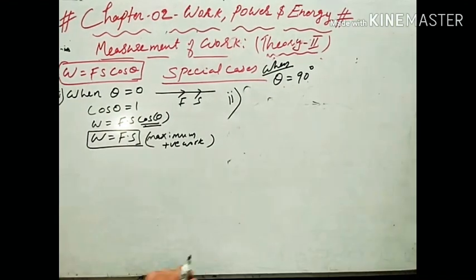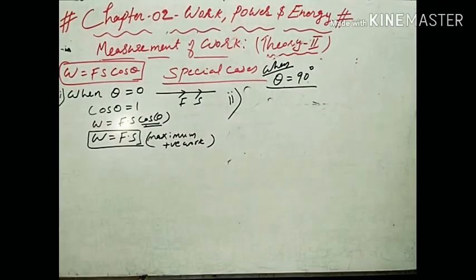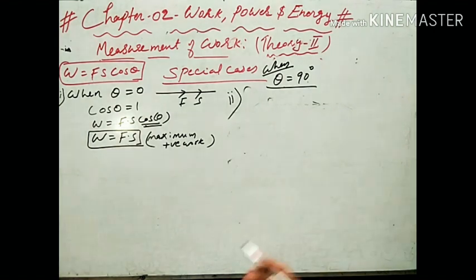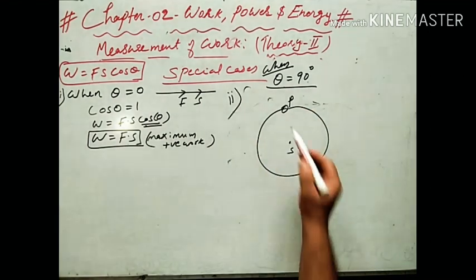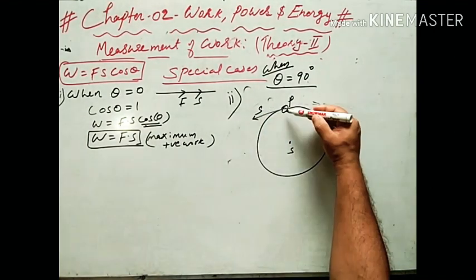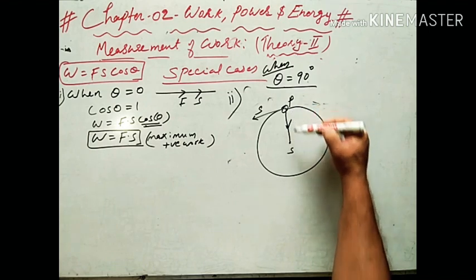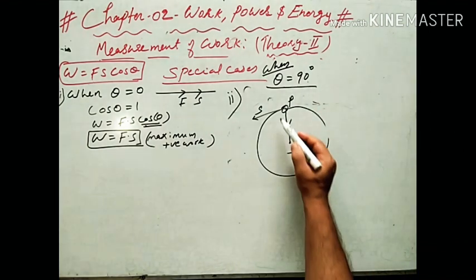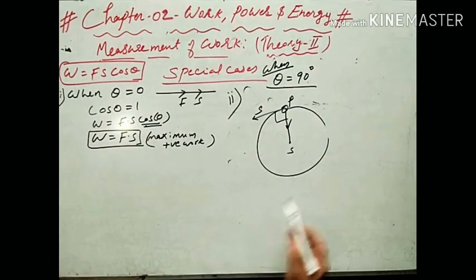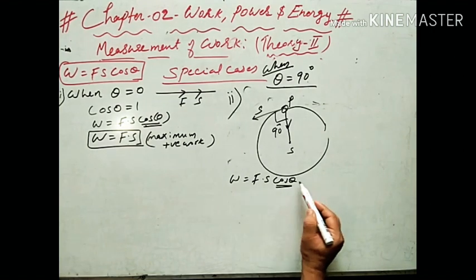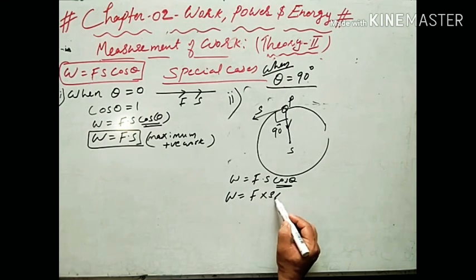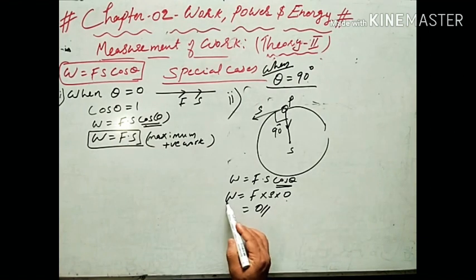Another example when theta equals 90 degrees: the motion of a planet around the sun in a circular path. The displacement is along the tangent and the gravitational force (centripetal force) acts toward the center — the angle between force and displacement is always 90 degrees. So W equals FS cos theta, with theta equals 90 degrees, giving W equals FS into 0 equals 0. Similarly, the moon revolving around the earth also does zero work.